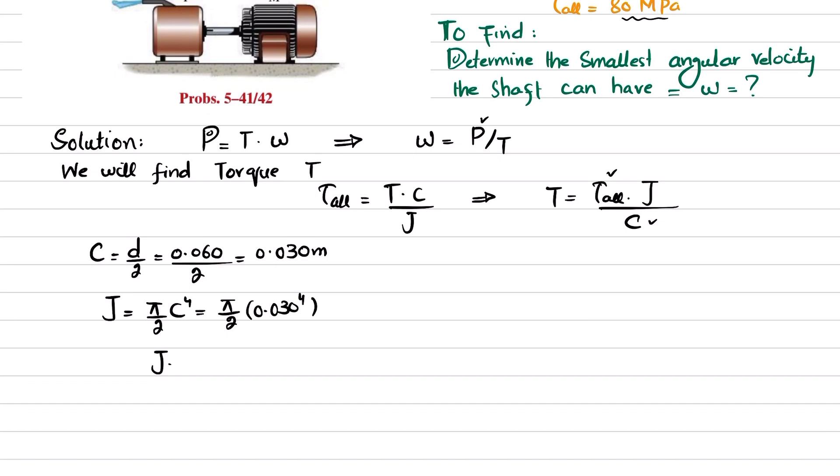When you calculate it, you get J equals 0.405 times 10 to the power minus 6 times π, and the unit will be meter to the power 4.